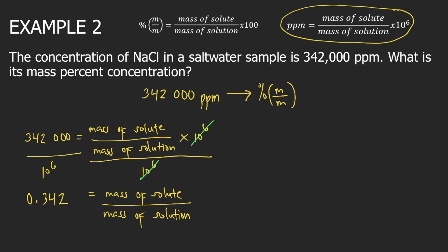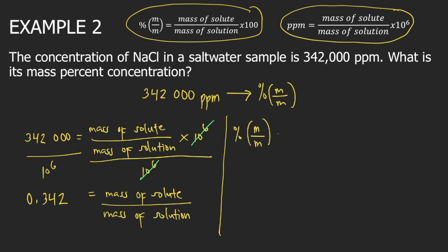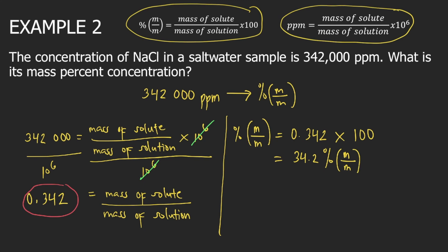So 0.342 is your mass of solute divided by mass of solution. Then use the formula for mass percent: mass percent equals mass of solute divided by mass of solution — which we solved as 0.342 — times 100. This equals 34.2% m/m, or 34.2% by mass. So this is the answer to example two. Thank you.